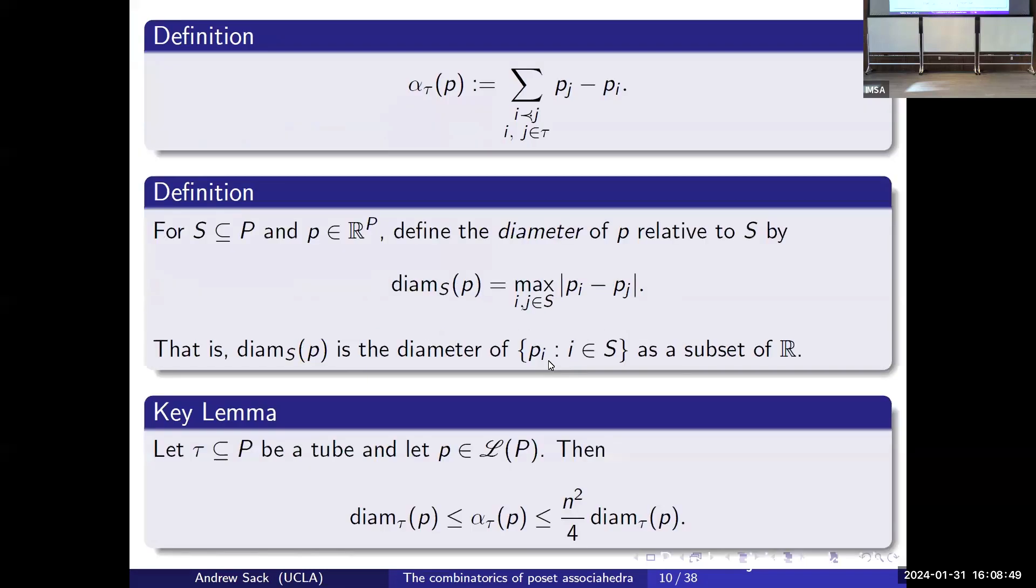Here you can see a vertex in the order polytope, which is just going to have as many things equal as possible. One thing that I want to point out about this function alpha is that on the order polytope, this is a non-negative sum because P_i is always bigger than or equal to P_j when i covers j. We define the diameter of P relative to a subset S as just the maximum distance between the coordinates coming from S. This is the diameter restricted to the subset.